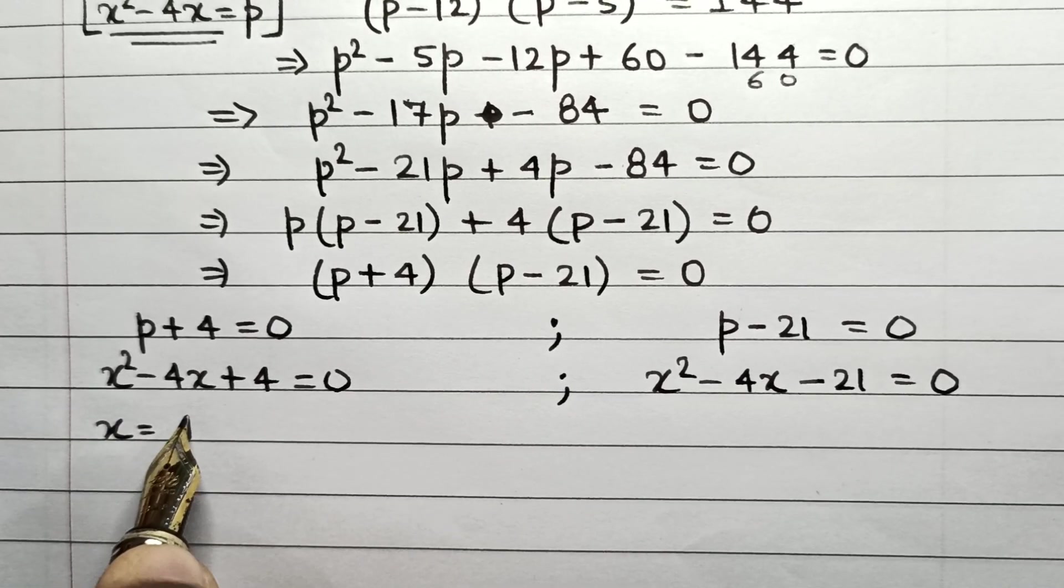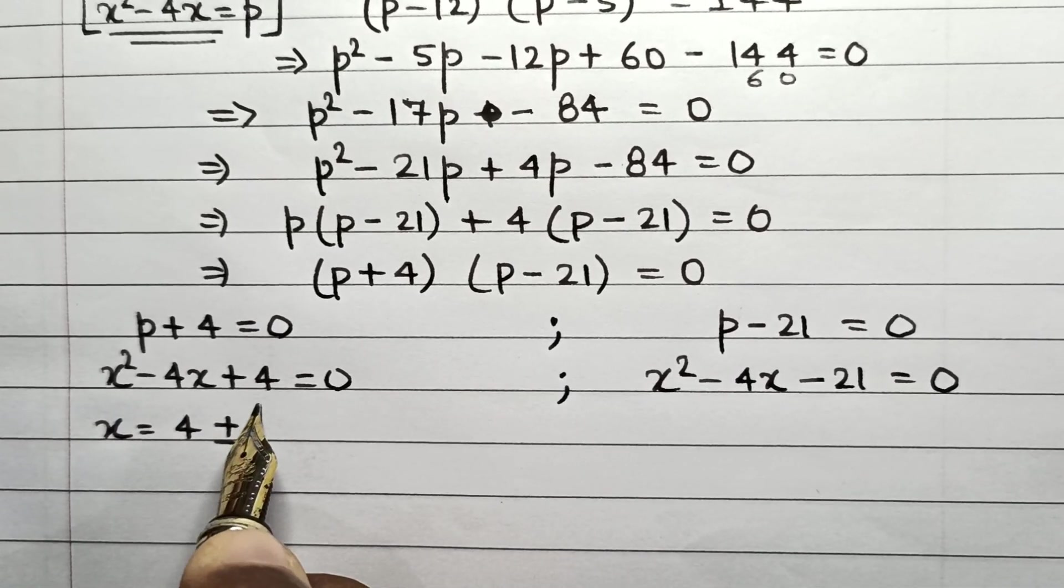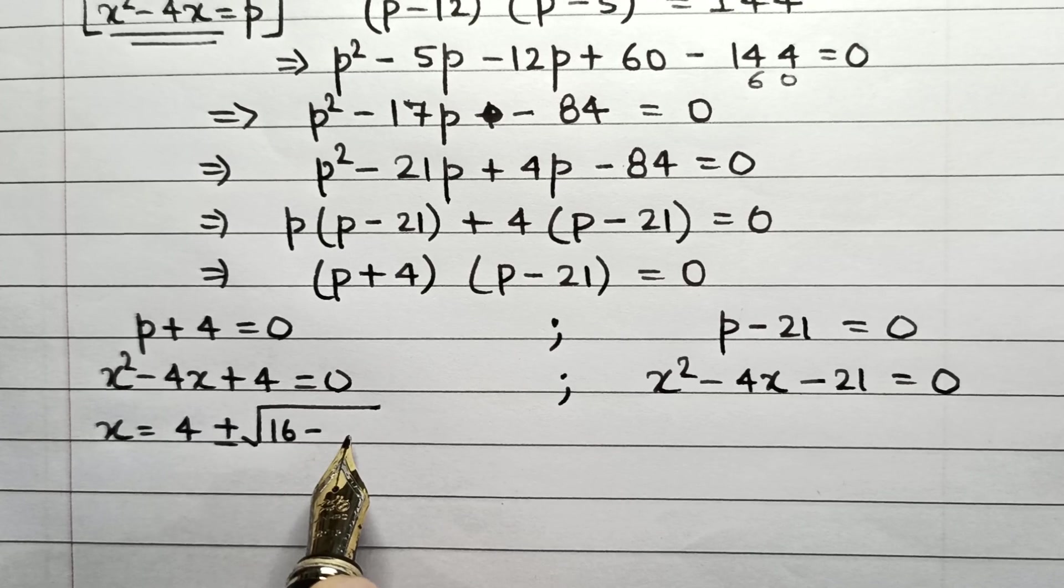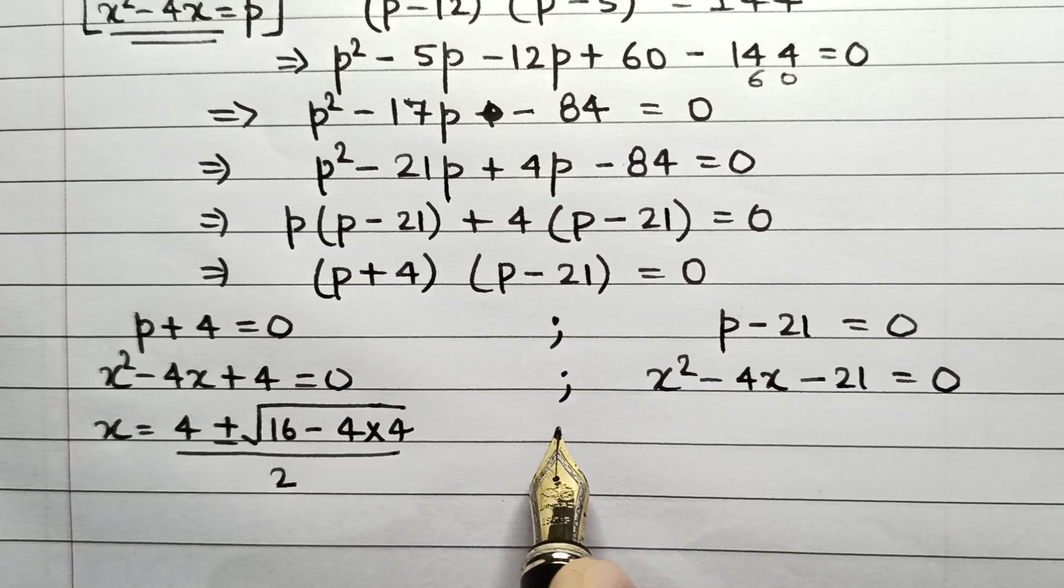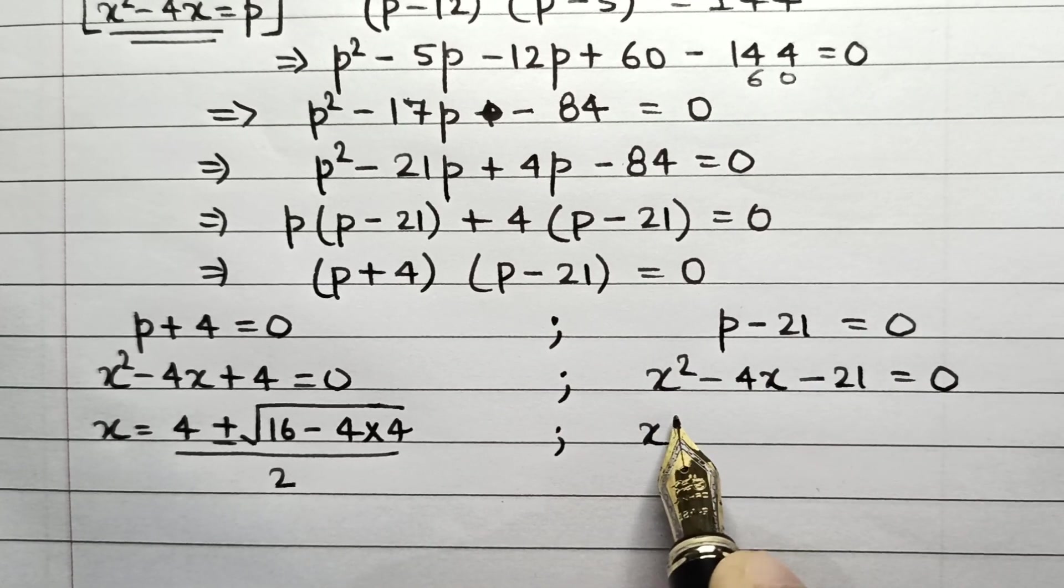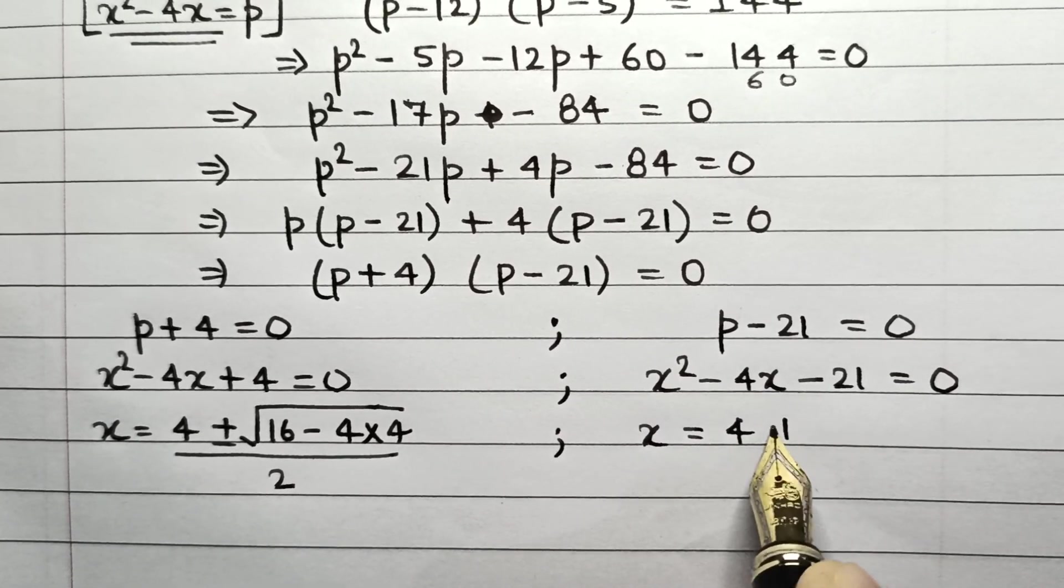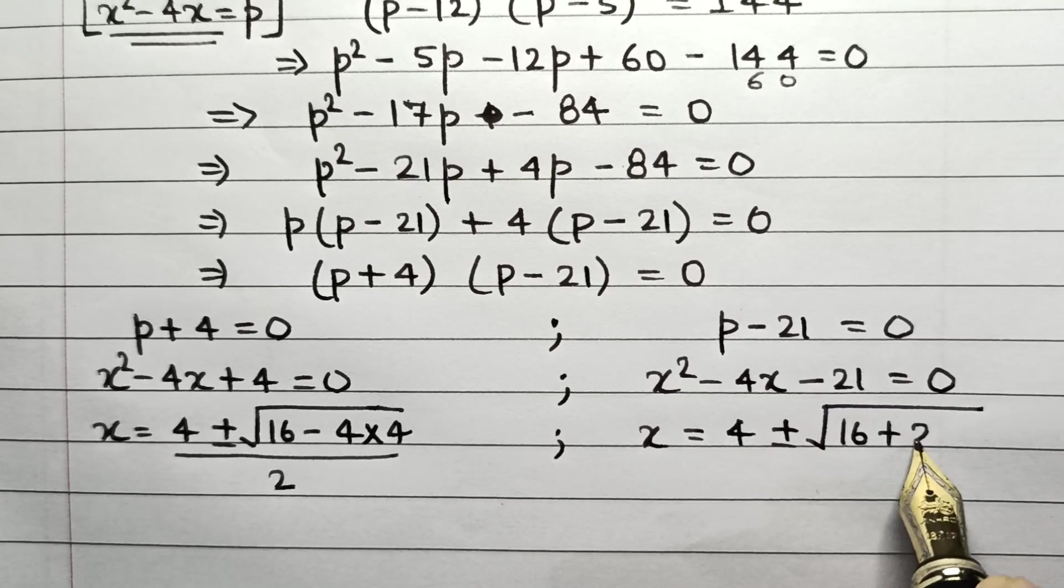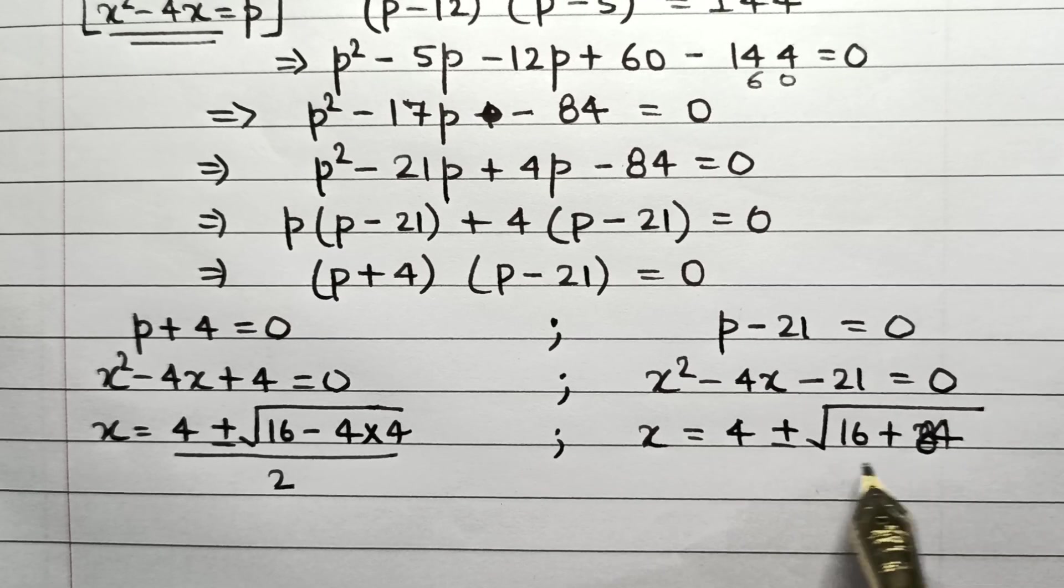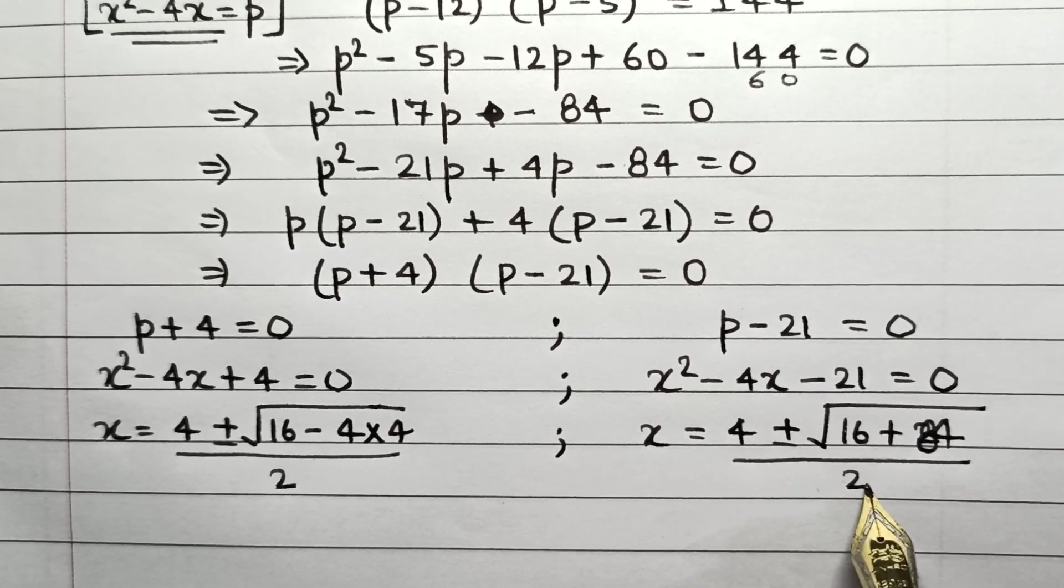So in this case, the value of x will be -b ± √(b² - 4ac) divided by 2a. And in this case as well, x = -b ± √(b² - 4ac) divided by 2a.